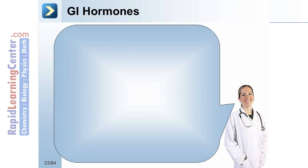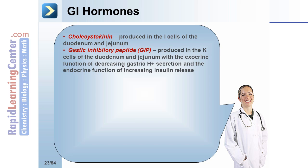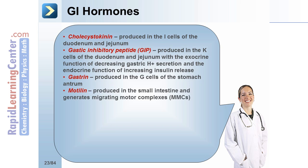There are a host of GI hormones arising from multiple sources with various actions. Cholecystokinin is produced in the I cells of the duodenum and jejunum, causing an increase in gallbladder contraction and pancreatic secretion, and a decrease in gastric emptying. Gastric inhibitory peptide, or GIP, is produced in the K cells of the duodenum and jejunum, with the exocrine function of decreasing gastric hydrogen secretion and the endocrine function of increasing insulin release. Gastrin is produced in the G cells of the stomach antrum, causing an increase in gastric hydrogen secretion, gastric motility, and growth of gastric mucosa. Motilin is produced in the small intestine and generates migrating motor complexes, or MMCs.